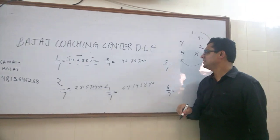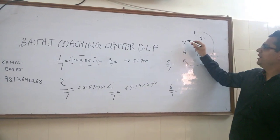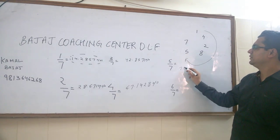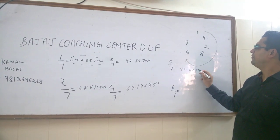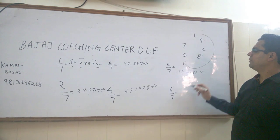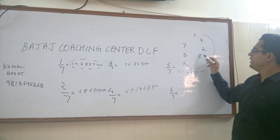What about five by seven? Definitely it will be 71.4285. And what about six by seven? It will be 85.7142.